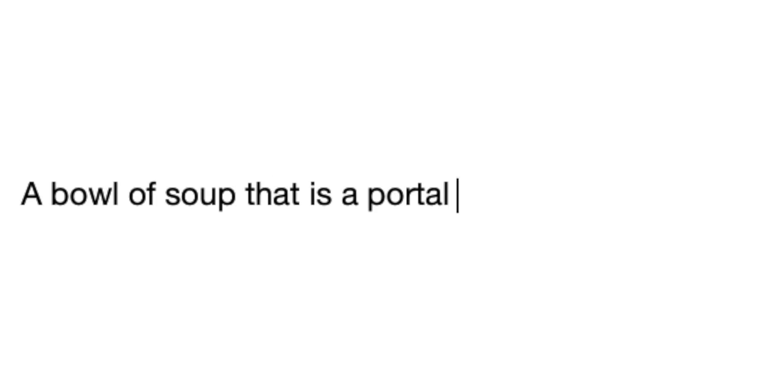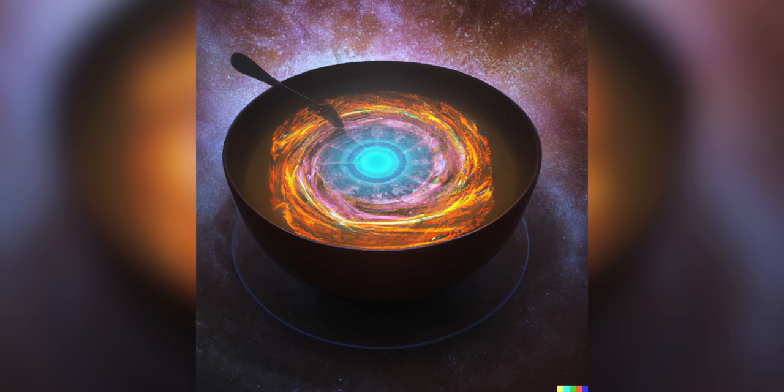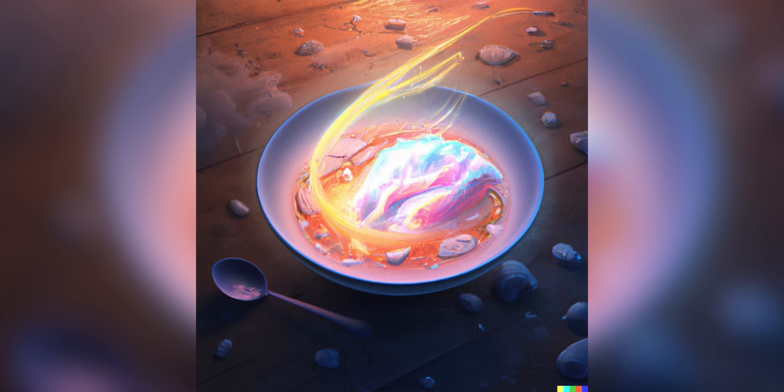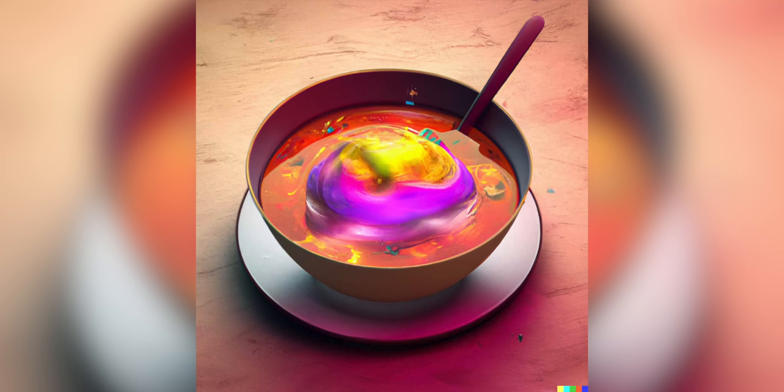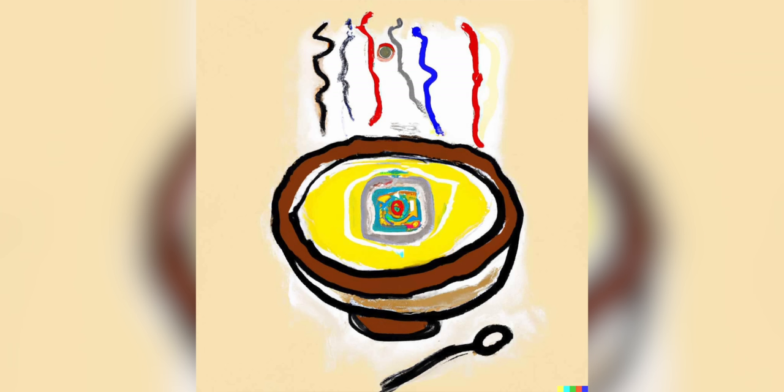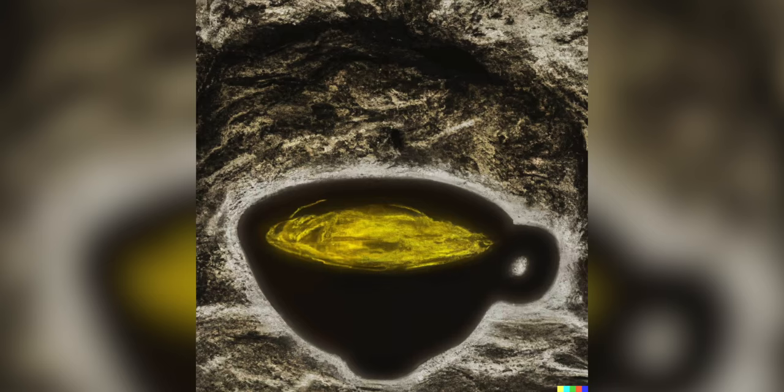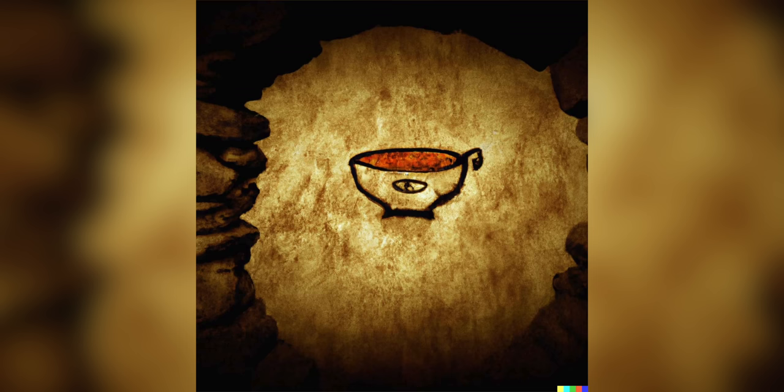You type a bowl of soup that is a portal to another dimension, and boom — my god — it's a bowl of soup that's a portal to another dimension. And it's not just one; it actually spits out 10 different versions across a spectrum of variation in any art style you want, you name it, and it can draw it. So what is happening here, how does it work, and what happens if I try?